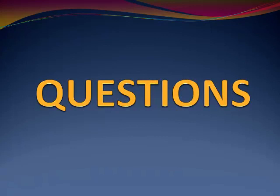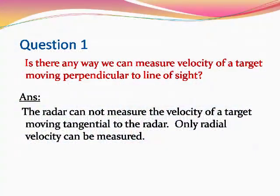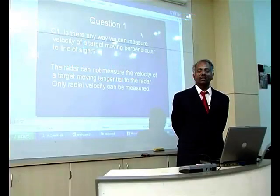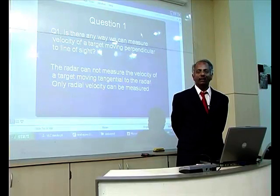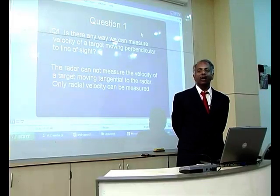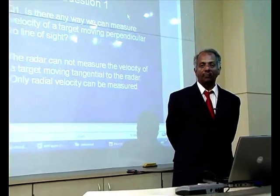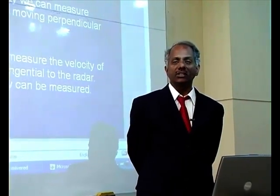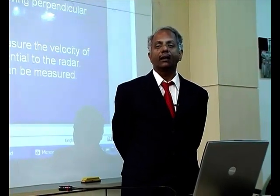The following question and answer session refers to the topic of CW radar. Question: Is there any way we can measure the velocity of a target moving perpendicular to the line of sight? Answer: If the target is approaching the radar or moving away in the same line, we can measure the velocity. Or if it is moving at an angle, we can find the component in the line-of-sight direction. But if the target is moving tangentially, we cannot measure the velocity using a radar system.